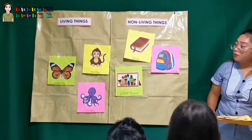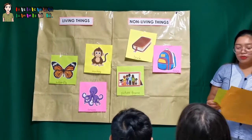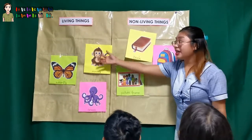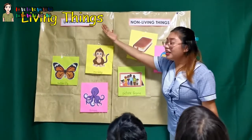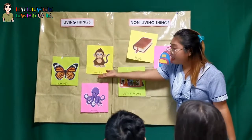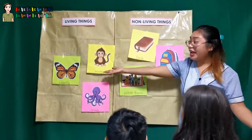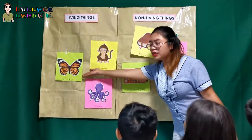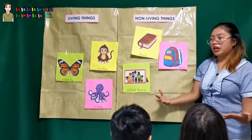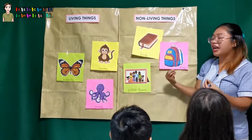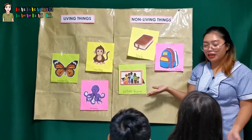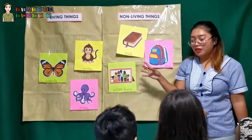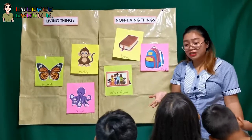Okay, let's observe the pictures. So on this side, this is the living things. Here is monkey, octopus, and butterfly. So how does a butterfly find its food to survive? What is the food of the butterfly? Leaves. Leaves. And what else? Flower. Flower.